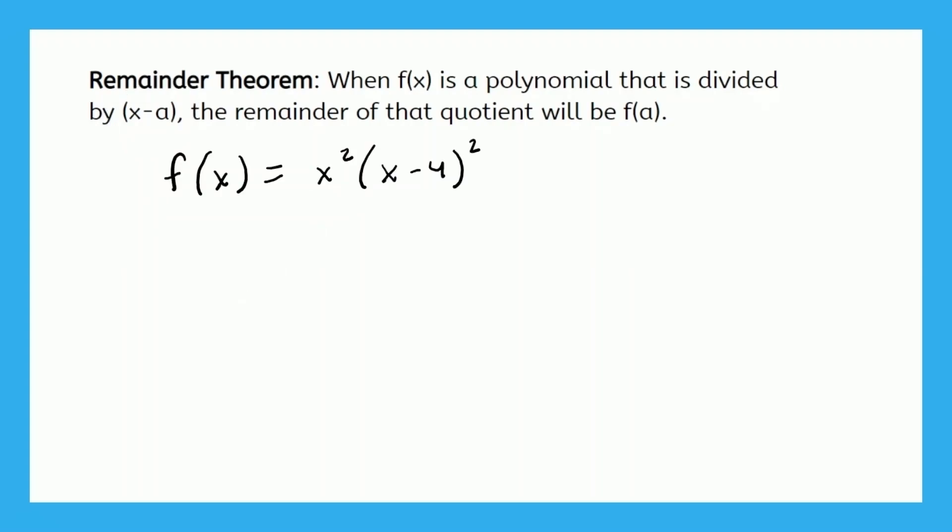So just as a quick introductory example, let's say that f(x) is equal to x² times (x - 4)². And let's say that (x - a) is (x - 4). So now we're going to do f(x) divided by (x - 4). So that is the division that we would do.